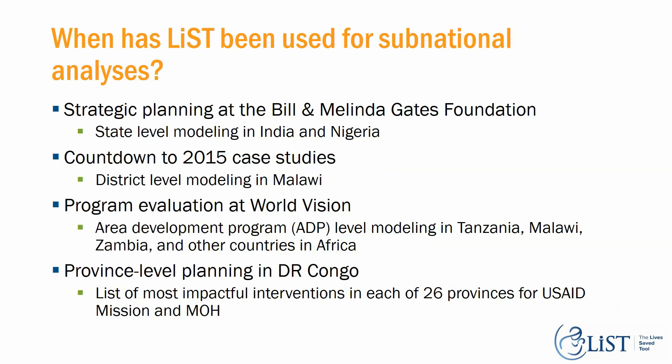LIST has been used multiple times to model at the subnational level. This includes strategic planning at the Bill and Melinda Gates Foundation using India and Nigeria data, Countdown to 2015 case studies in Malawi, program evaluation at World Vision, and province-level planning in DRC to determine which interventions are most impactful for the 26 provinces.